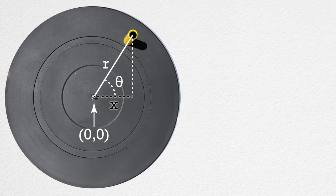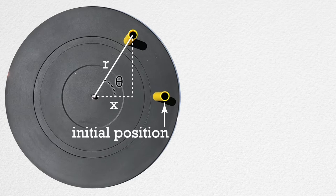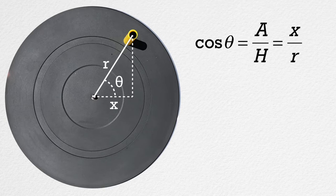Theta is the angular displacement of the cap from an initial position where the cap was at its extreme position to the right. Cosine theta equals adjacent over hypotenuse, or the x position divided by radius. Multiplying the equation by radius gives us the x position of the cap equals radius times cosine theta.